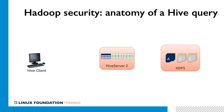There are quite a few moving parts in a fully secured Hadoop cluster. In order to appreciate their interaction, let's start with a simple example of a Hive client issuing a query on behalf of user Joe. The first thing that a client would do is initiate a DBC connection to Hive Server 2 and actually submit the query.